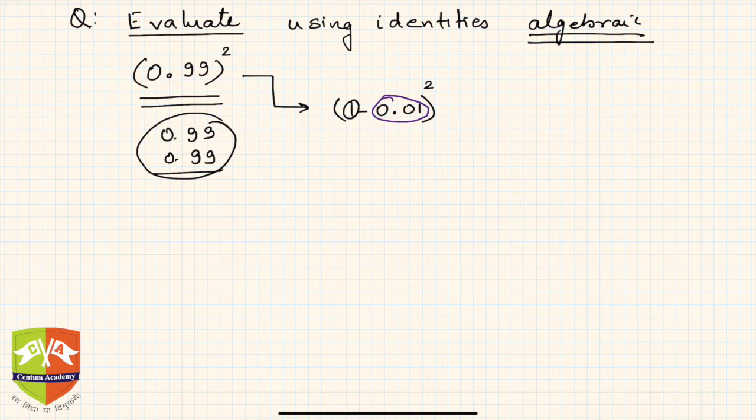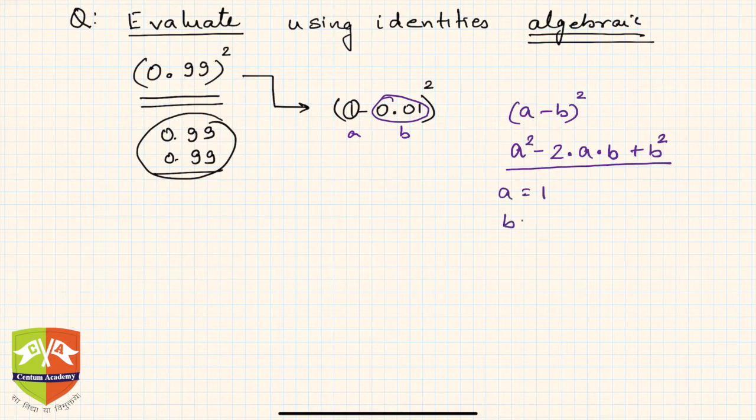If you consider 1 as a and 0.01 as b, then this is simply (a-b)². From our knowledge of algebraic identities, we know (a-b)² = a² - 2ab + b². These dots are not decimals, these are multiplication.